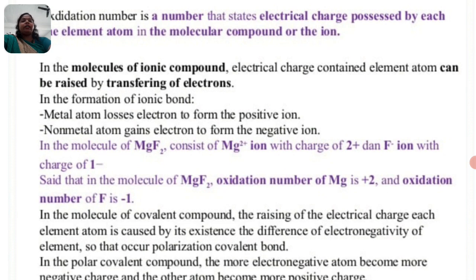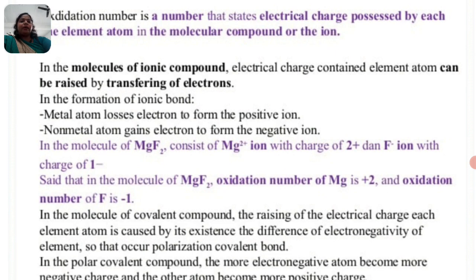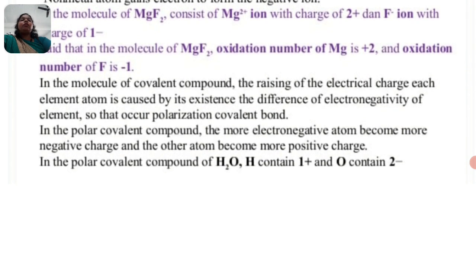In the molecule of magnesium fluoride (MgF2), it consists of the magnesium ion with a charge of plus 2, and the fluorine minus ion with a charge of minus 1. So for MgF2, magnesium has a plus 2 charge and fluorine has a minus 1 charge. Therefore, the oxidation number of magnesium is plus 2 and the oxidation number of fluorine is minus 1.